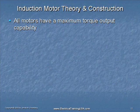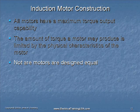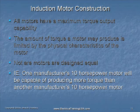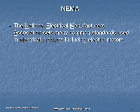All motors have a maximum torque output capability. It's a physical property of the motor. The amount of torque that a motor may produce is limited by the physical characteristics of that motor. Not all motors are created equal. In other words, one manufacturer's 10 horsepower motor will be capable of producing more torque than another manufacturer's 10 horsepower motor. NEMA, the National Electrical Manufacturers Association, is a consortium of electrical manufacturers that have joined together to write a set of standards so that one manufacturer's product is interchangeable with another.